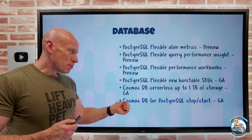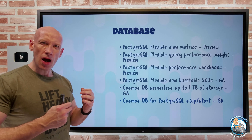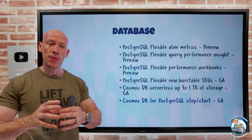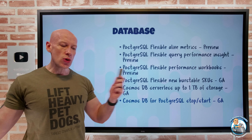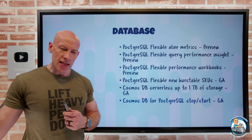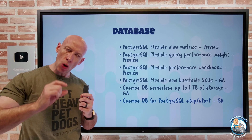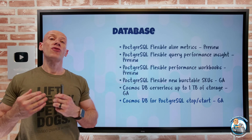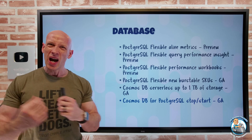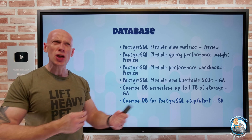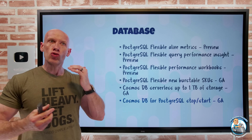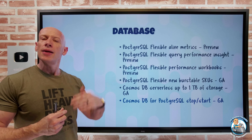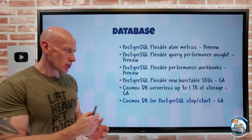Cosmos DB for PostgreSQL — previously hyperscale using the Citus extension for data sharding, larger databases, and higher performance — can now stop and start. Stopping and starting refers to stopping and starting the compute. So you stop paying for the compute side of the workload and just pay for provisioned storage. For a dev/test environment this can greatly reduce your bill. That is now GA.